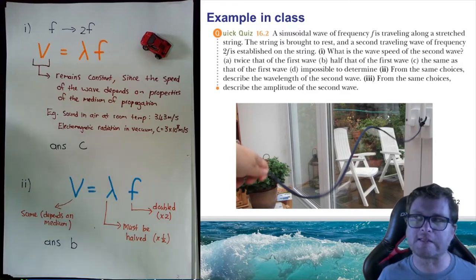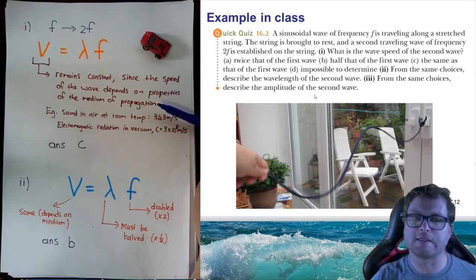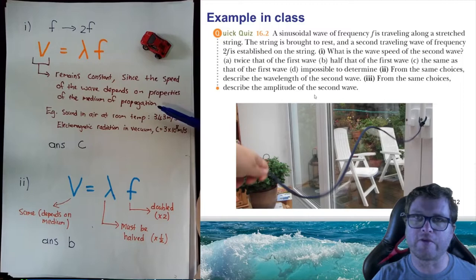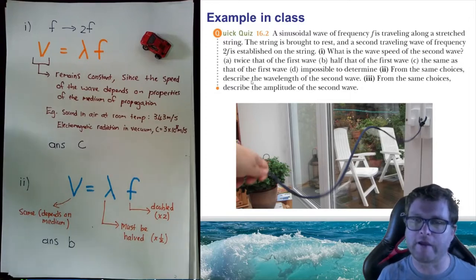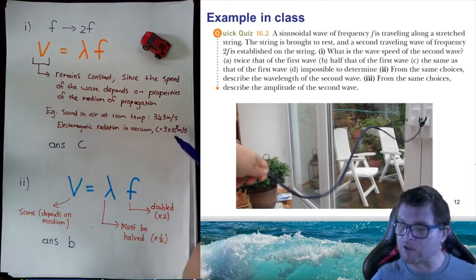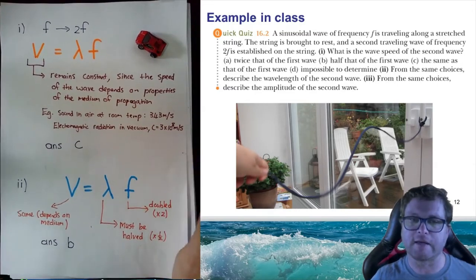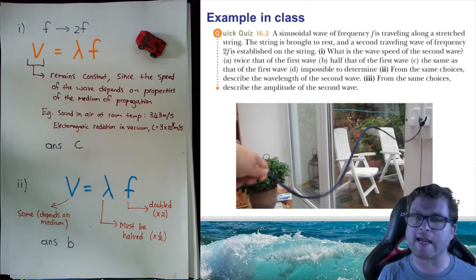It turns out that the velocity remains constant. The reason is that the speed of a wave in a material depends on the properties of the medium in which it propagates. So the speed of a wave in a certain material will always be constant at a given temperature. If we stay in the same medium — in our example, the wave is moving in the string in both cases — the properties of the string stay the same and the speed doesn't change. For example, the speed of sound in air at room temperature is 343 m/s, and the speed of electromagnetic radiation in a vacuum is 3 × 10⁸ m/s. So the answer is C — the same as the first wave.